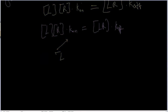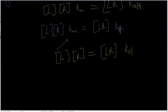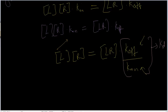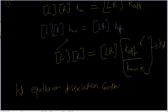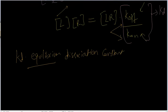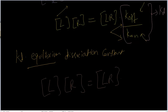Let's rearrange this. L times R equals the LR complex times K_off over K_on — that is, dissociation rate constant over association rate constant. This term can be replaced with K_D. K_D is the equilibrium dissociation constant — don't get confused. So the equation becomes: L times R equals LR times K_D.